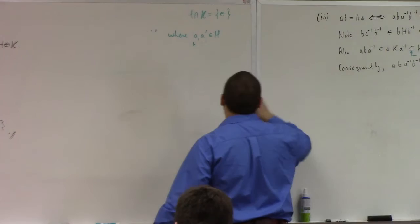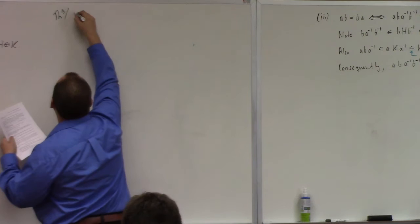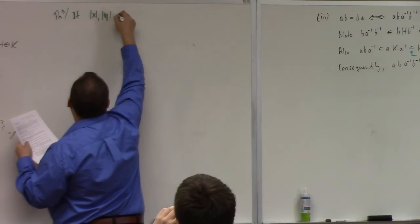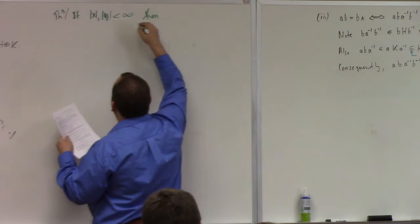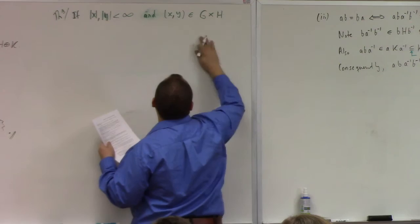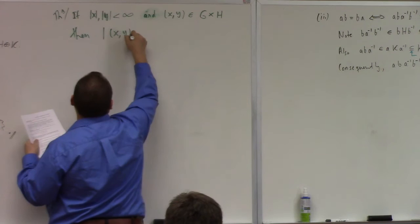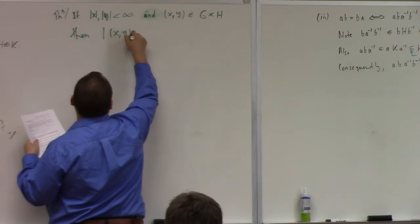Our next result is a calculational masterpiece. Theorem — stupidly useful: if the order of x and the order of y are finite, and x, y are elements of the external direct product G cross H, then the order of the tuple (x, y) is equal to the least common multiple of the order of x and the order of y.